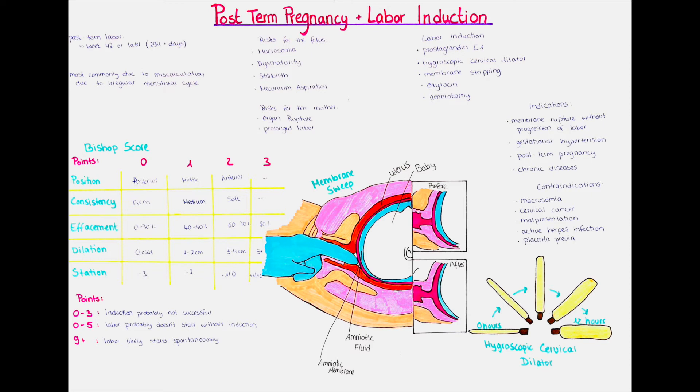Risks to the mother are usually related to the larger-than-normal baby and include difficulties during labor. It increases the chance of rupture of the perineum, labia, rectum, and vagina in a vaginal delivery. And in the case of a cesarean delivery, the risk of bleeding, infection, and injury to the surrounding organs is increased. And what is the medical approach to ensure optimal health for the mother and child?